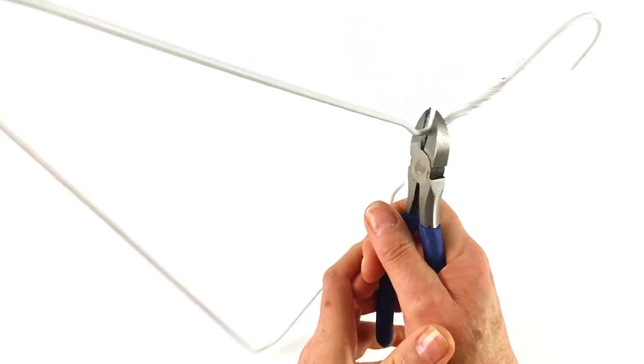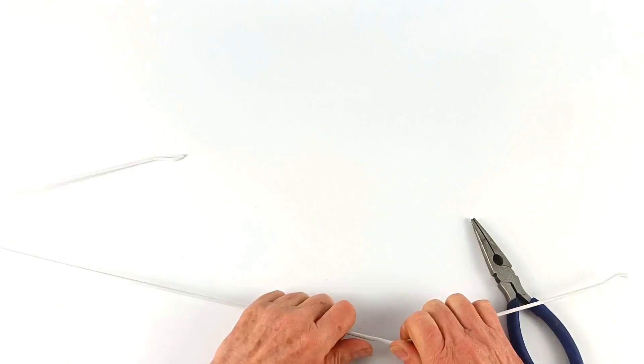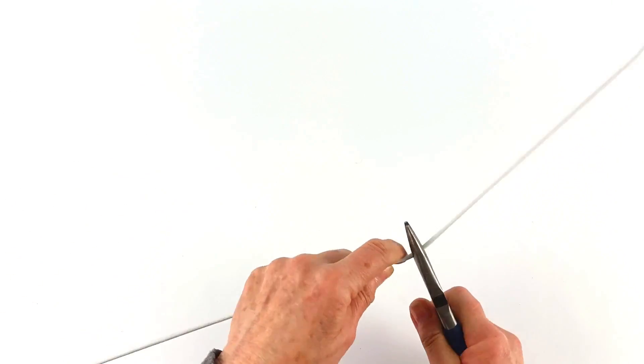We're going to take an old wire coat hanger and snip off the hanger part. You can do this ahead of time if you don't want your kids doing it, depending on how old your students are that are doing this project.